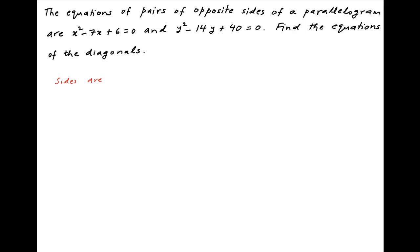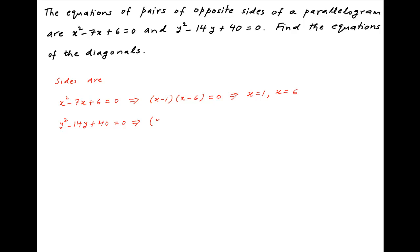The equations of the sides of the parallelogram are x² − 7x + 6 = 0 and y² − 14y + 40 = 0. The first equation can be written as (x − 1)(x − 6) = 0, which implies x = 1 or x = 6. The second equation can be written as (y − 4)(y − 10) = 0, which implies y = 4 or y = 10.